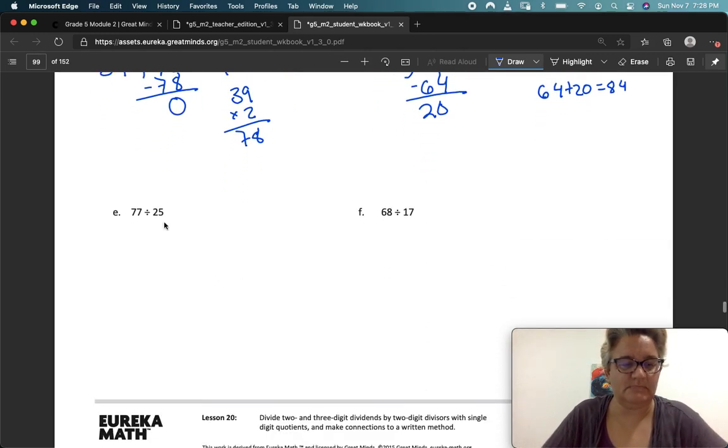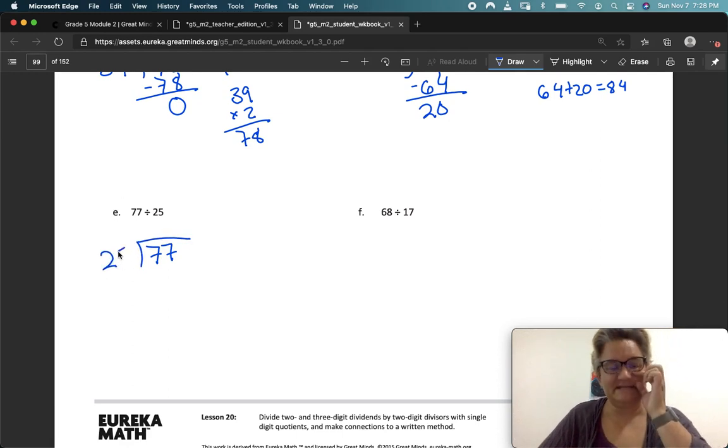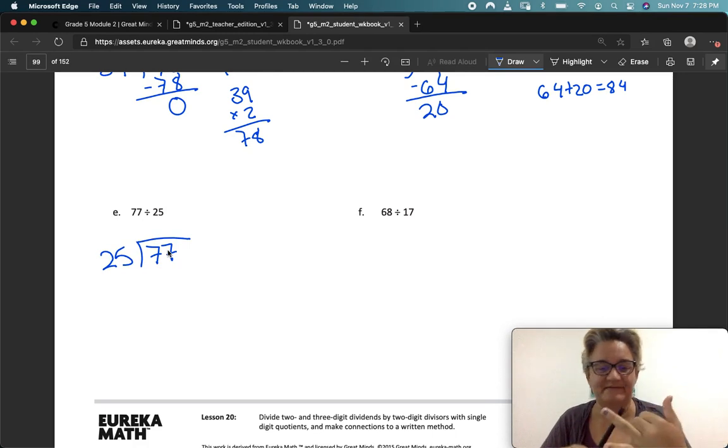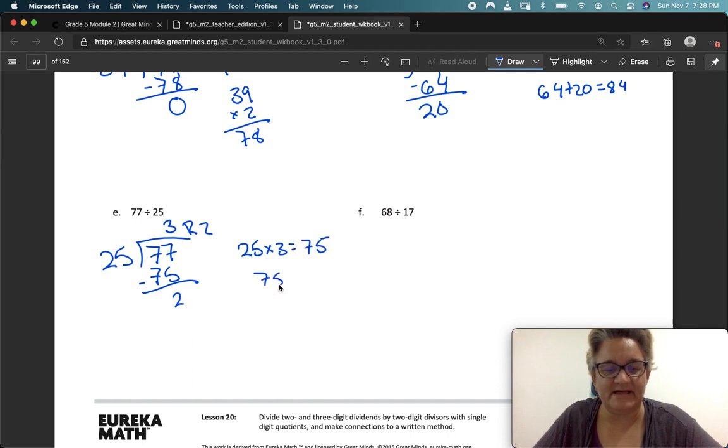E. 77 divided by 25. And 25 is easy. I don't have to round up at all. So 25, 50, 75, 100. 75 is really close to 77. So I know that 25, 50, 75 is 3. 3 times 25 is 75. And then I have a remainder of 2. Then I check my work. 25 times 3 equals 75. 75 plus 2 equals 77.